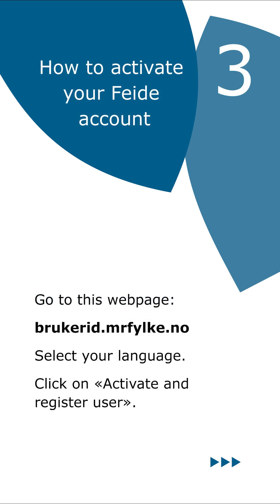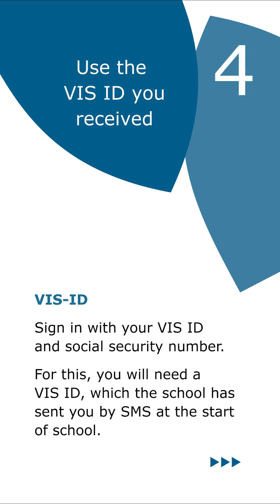How to activate your FIDA account: Go to the webpage brukerid.mrfylke.no, select your language, and click on Activate and register user. Use the visa ID you received — sign in with your visa ID and social security number. You will need a visa ID, which the school has sent you by SMS at the start of school.